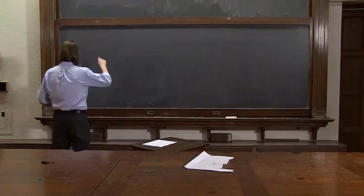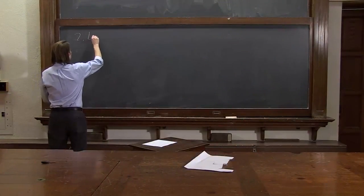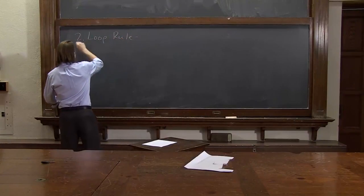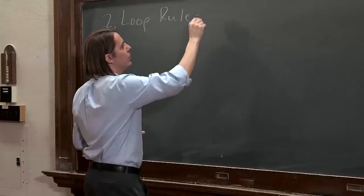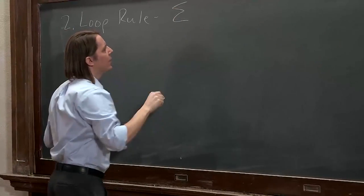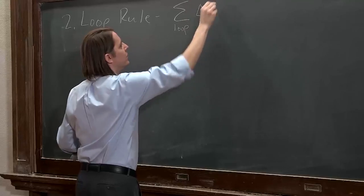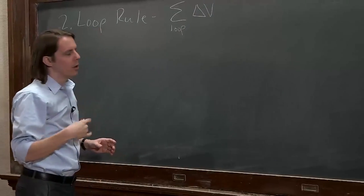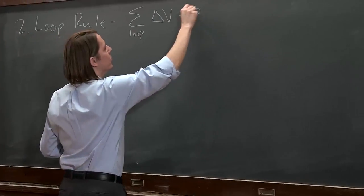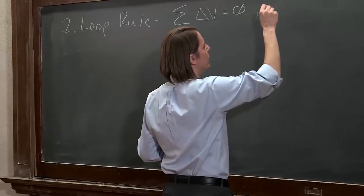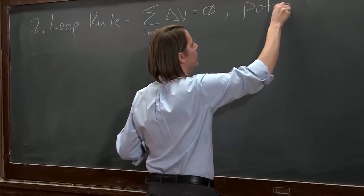And now we have Kirchhoff's second rule, the loop rule. Mathematically, it's also a sum. It's the sum, if we go around a loop, that all of the potential differences on the different elements in the circuit will equal zero. So the potential difference in words, the potential difference around the loop is zero.